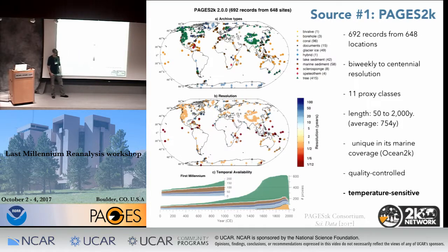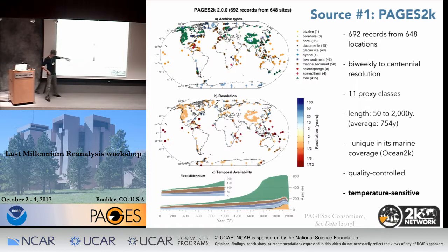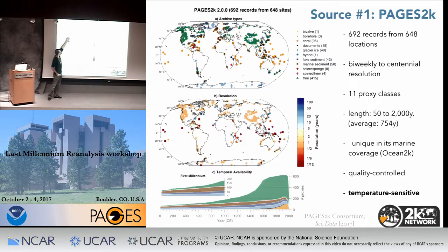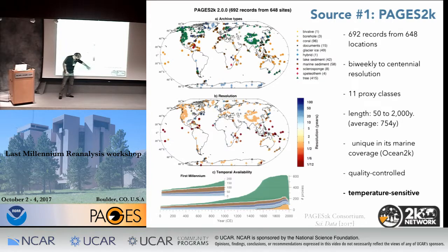There are also more low-resolution but longer-term proxies in the database. In the first millennium, we have roughly equal proportions between tree rings, marine sediments, lake sediments, and ice cores. And of course, a lot of corals — about 96 of them — which unfortunately, except for Palmyra, peter out before the 1600s or so.